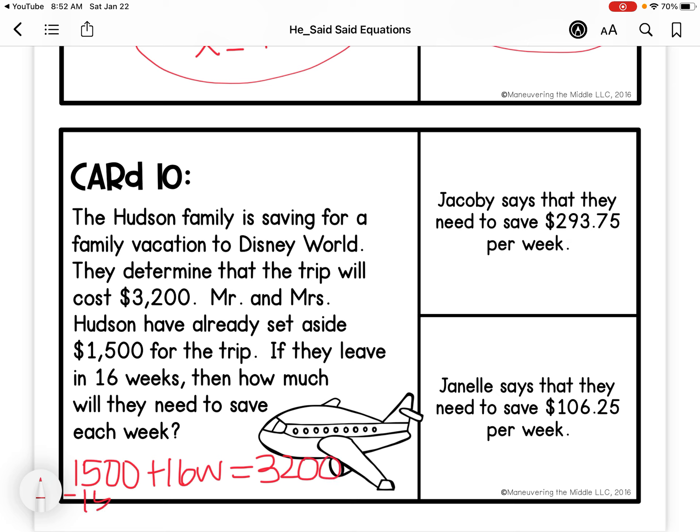So I'm going to subtract $1,500. So I have 16 W equals $1,700. And I'm going to divide by 16. So that's going to give me 106.25. So Janelle is correct.